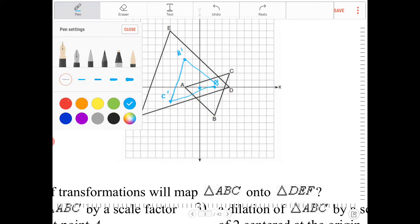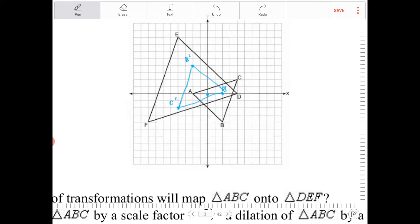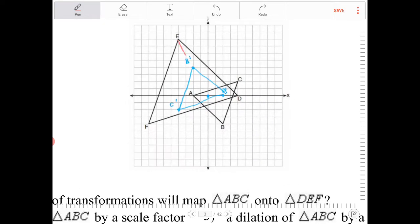So if I, again, dilate from the origin, you can see that going from B prime to E, we go over two and up four, over two and up four. And then going from C prime to F, we go over four and down two. Go over four and down two. That's a dilation of two.